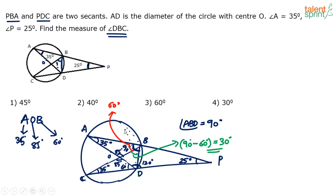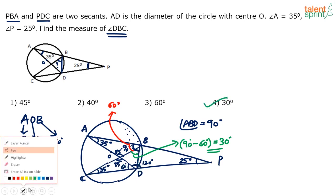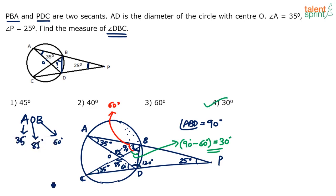So angle DBC comes out to be 30 degrees. Option 4 will be the final answer. There are multiple ways of solving it — the number of steps may increase or decrease depending on what theorems or concepts you use, but you have to quickly use different points to evaluate the angle. Option 4, 30 degrees, is the final answer.